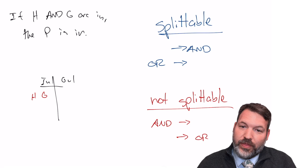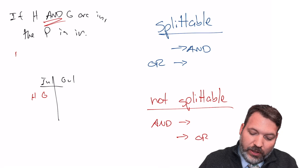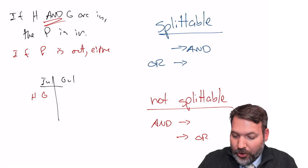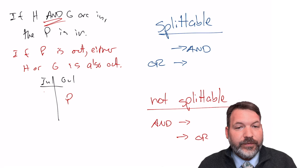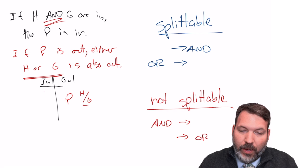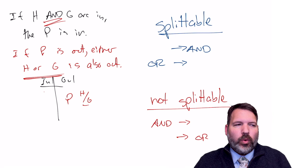Correspondingly, when OR follows the arrow — which we get from the contrapositive of a statement with AND on the if side — that is also not a splittable statement. For example, the contrapositive would say 'if P is out, then either H or G is also out,' but we wouldn't know which one. We can't say for sure which goes out, so we cannot split this into two different conditional statements.